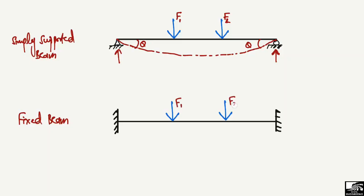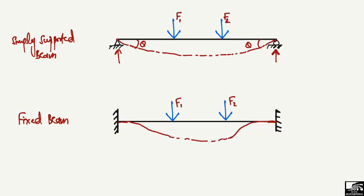Due to these loads, the beam will try to deflect. However, we see that there is no deflection at the ends of the beam — neither at this part nor at this part — because we have fixed supports at both ends. Due to these fixed supports, our beam will not show any deflection at the ends.